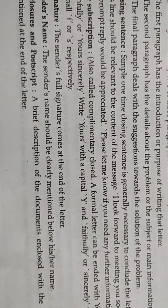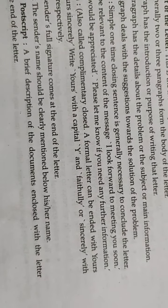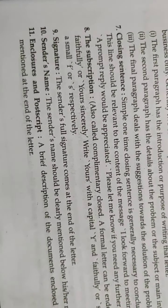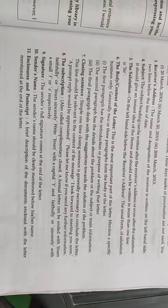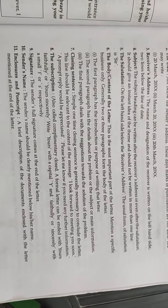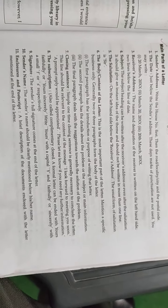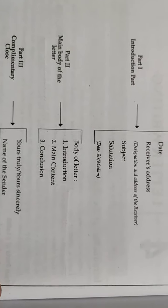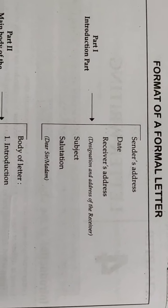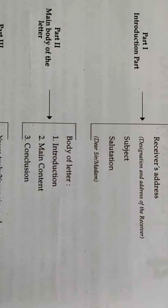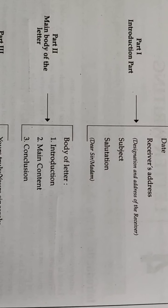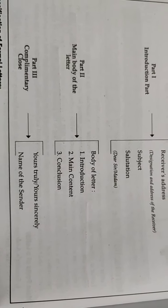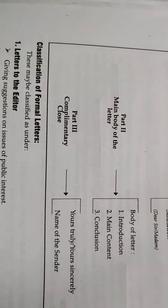The subscription, also called the complimentary clause, ends the formal letter with 'Yours faithfully' or 'Yours sincerely'. Write 'Yours' with a capital Y, and 'faithfully' or 'sincerely' with a small f or s respectively. Point number 9 is the signature — the sender's full signature and name should come at the end of the letter, clearly mentioned below.